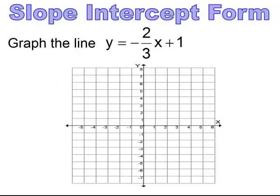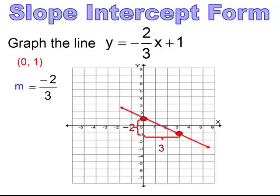Pause and try. The intercept is (0, 1) and the slope is negative 2. Put the negative with the vertical movement; horizontal movement is positive 3. Plot the point, go down 2 and over positive 3 to the right, and graph the line.